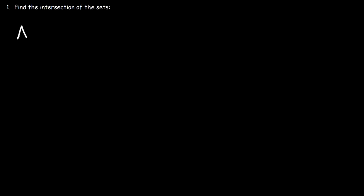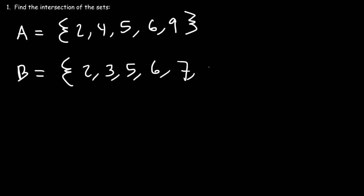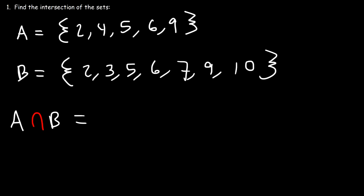Let's say we have set A, which contains the elements 2, 4, 5, 6, and 9, and we also have set B, which contains the elements 2, 3, 5, 6, 7, 9, and 10. So, what is the intersection of sets A and B? To find the intersection, we need to find out which elements are common to both sets.